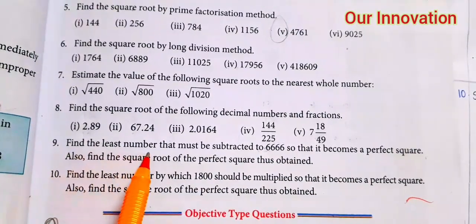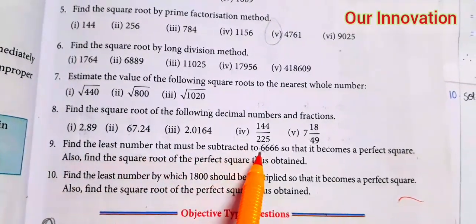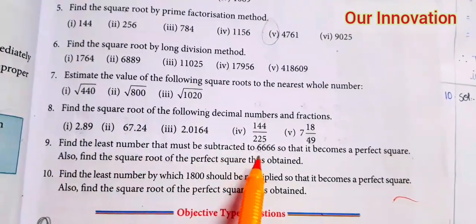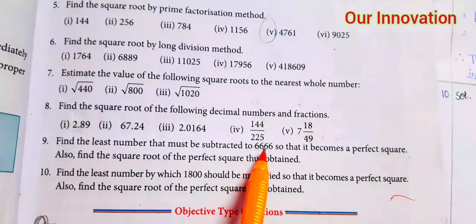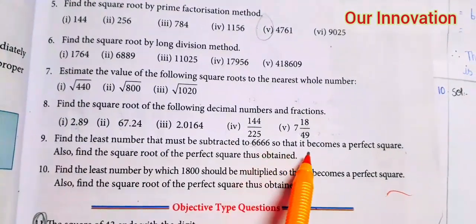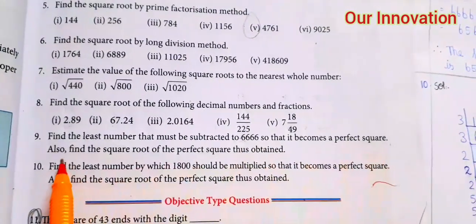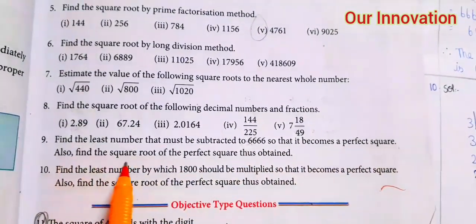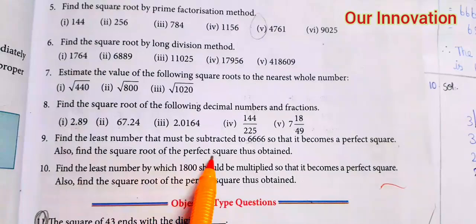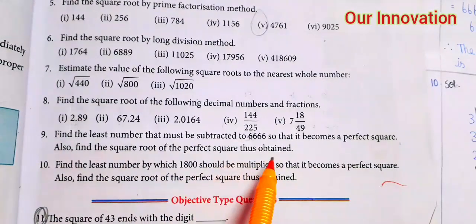Find the least number that must be subtracted from 6666 so that it becomes a perfect square. Also find the square root of the perfect square that is obtained.